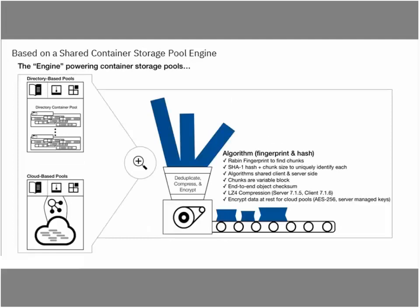Cloud container storage pools share the same underlying technology that has powered our directory container storage pools. This is our Rabin fingerprinting algorithm — the deduplication engine — where deduplication is performed inline at the server, rather than as a post-processing step. The cloud pools also have LZ4 compression, an efficient algorithm available as of 7.1.5 in the server and 7.1.6 for client-side compression. At-rest encryption using AES-256 is available for both cloud pools and directory container storage pools. We have a unified engine that enables us to easily move data back and forth between pools.